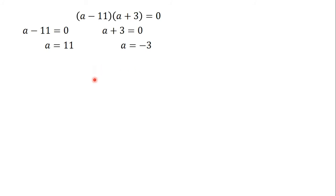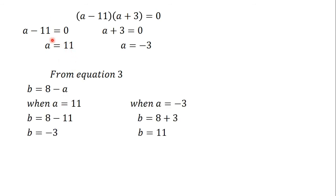Now we find b in each case using equation three: b equals 8 minus a. When a equals 11, b equals 8 minus 11, which gives b equals negative 3. When a equals negative 3, b equals 8 minus (negative 3), which is 8 plus 3, giving b equals 11.